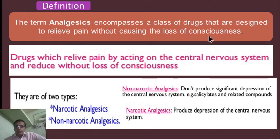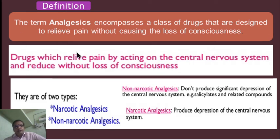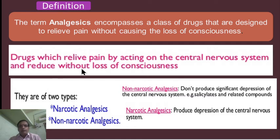Another definition: analgesics are a class of drugs designed to relieve pain without causing loss of consciousness. They relieve pain by acting on the central nervous system without causing loss of consciousness. Based on these definitions, analgesics are chemical compounds or drugs which may be administered to relieve pain such that the person retains full consciousness.